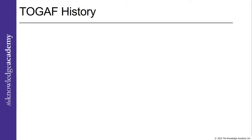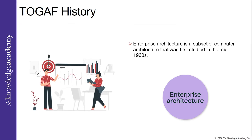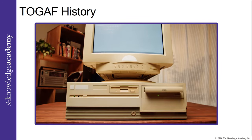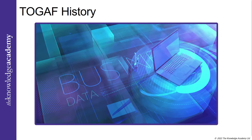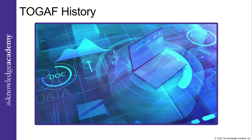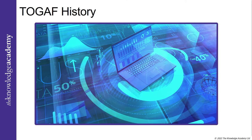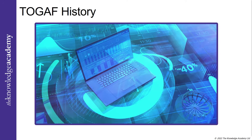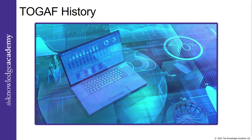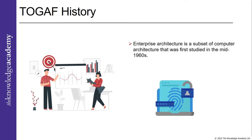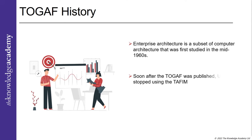TOGAF history: Enterprise architecture is a subset of computer architecture that was first studied in the mid-1960s. Technology advanced over the following few decades, and today most businesses, regardless of size or scale, utilize the internet to streamline, accelerate, and occasionally make their corporate operations more transparent. Today, enterprise architecture is a crucial factor necessary to make sense of various hardware and software used across on-premise and cloud environments, and good enterprise architecture ensures high-level security when sharing data over the internet.